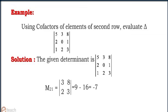The minor m21 is equal to minus 7. Therefore, the cofactor of a21 is equal to minus 1 to the power 2 plus 1 into m21, which equals 7.